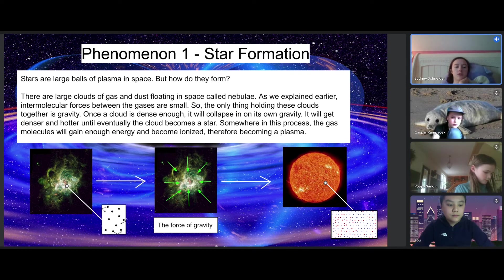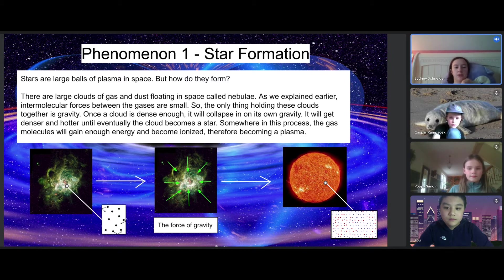Stars are large balls of plasma in space, but how do they form? There are large clouds of gas and dust floating in space called nebulae. As explained earlier, intermolecular forces between the gases are small, so the only thing holding these clouds together is gravity.